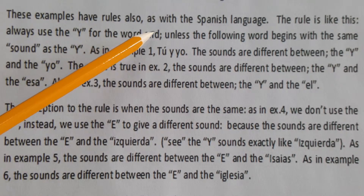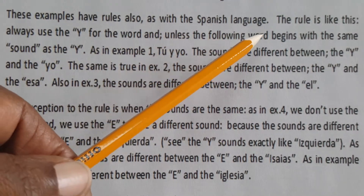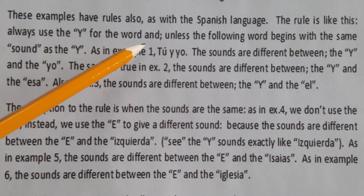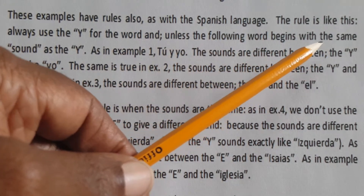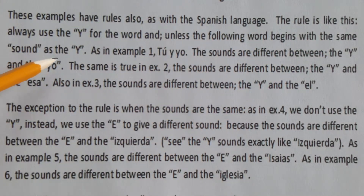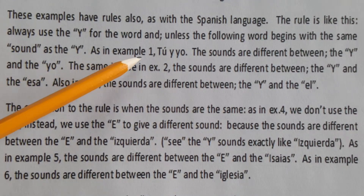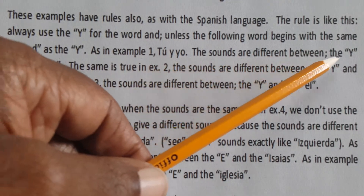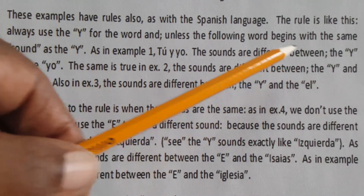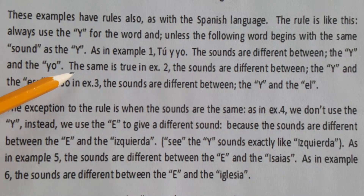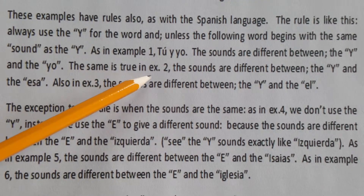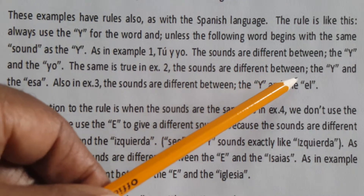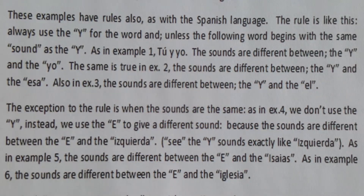These examples have rules, as with the Spanish language. The rule is: always use 'y' for the word 'and,' unless the following word begins with the same sound as 'e.' In example one, 'tú y yo,' the sounds are different between 'y' and 'yo.' The same is true in example two — the sounds are different between 'y' and 'esa.'